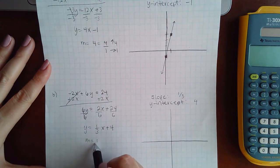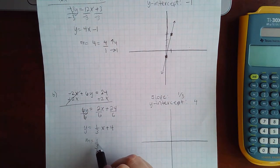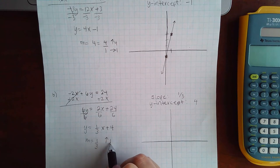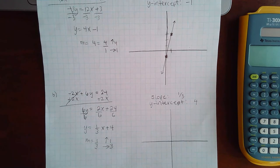Now if the slope is 1/3, that means it's positive, so we're going to go up one. Always run forward, but since the bottom is three, you're going to go three units in that direction.